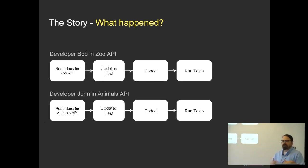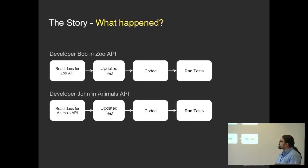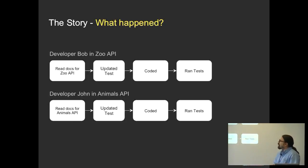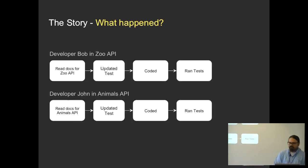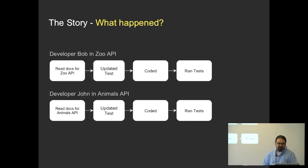Let's go over what happened. Each API developer was concentrated on their own API. Bob from the zoo API only updated his own tests, updated his own code, and ran the tests for his API. Same thing with John — he worked on the animals API, only read the documents for the animals API, and ran the tests for that.